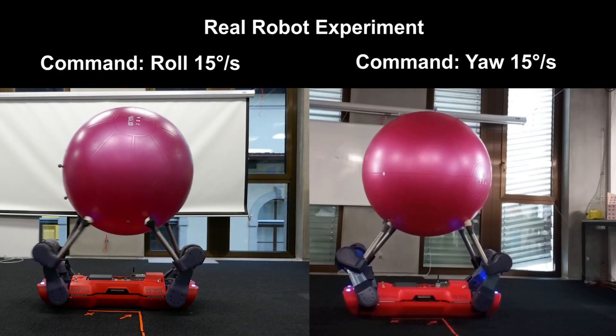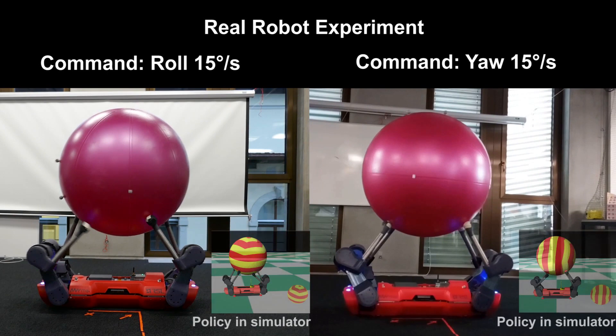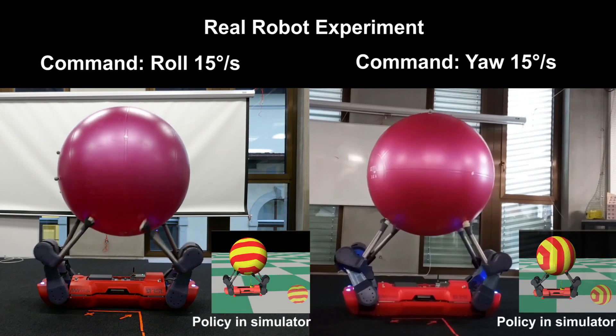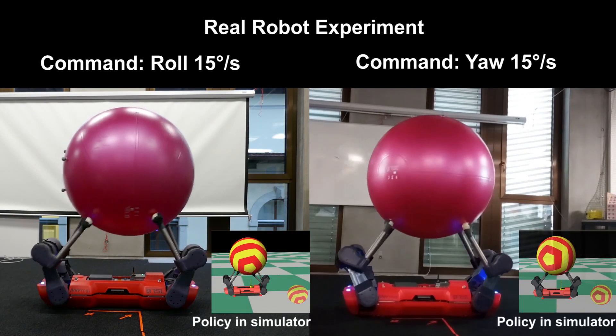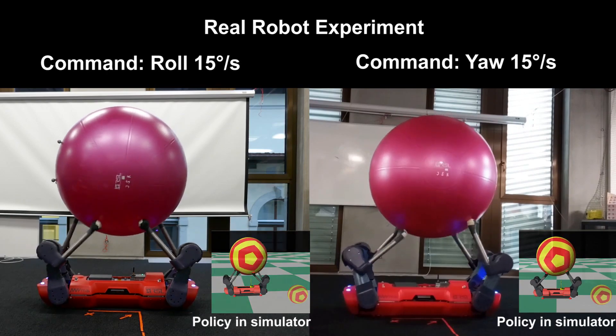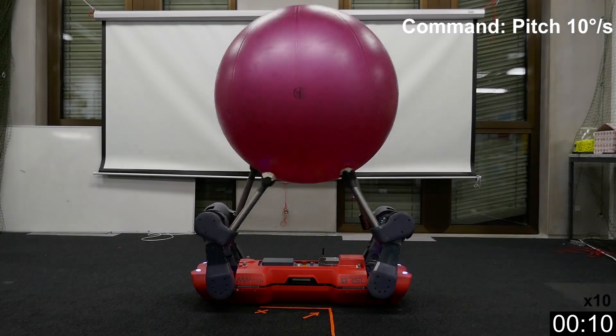In our real-world experiments the ball's position and orientation are obtained from an external motion capture system. Despite the model mismatch between the real experiment and the simulation our policy performs robustly.